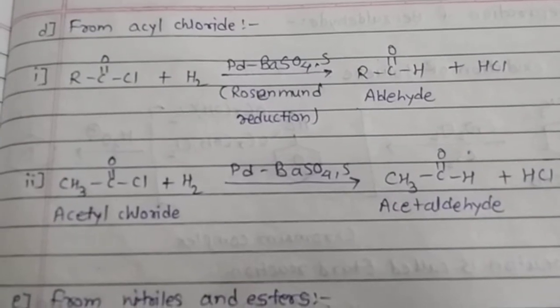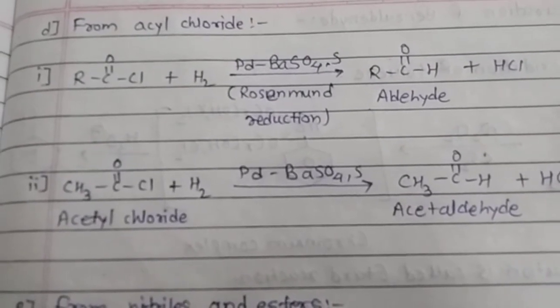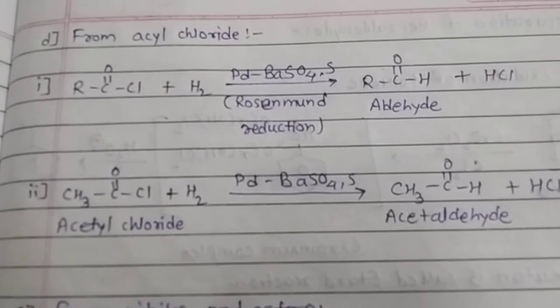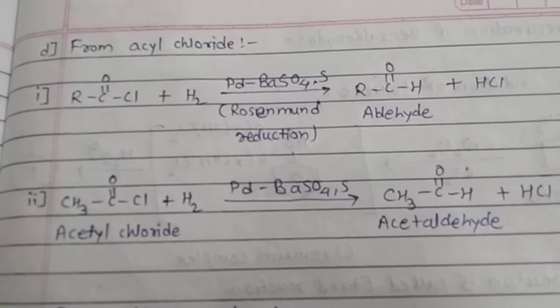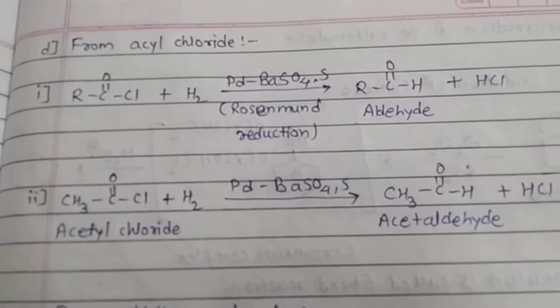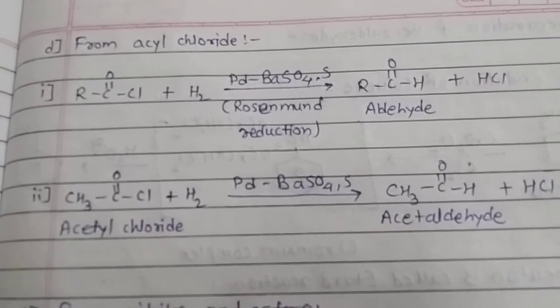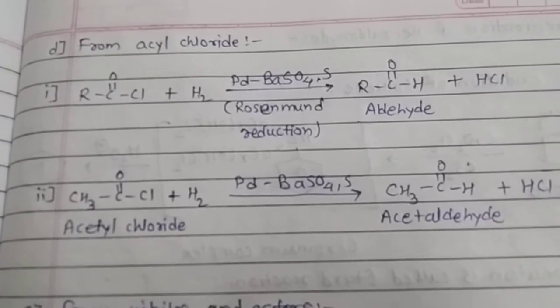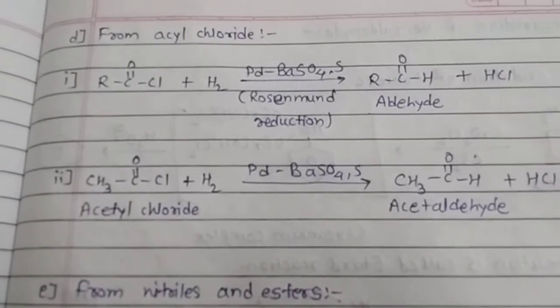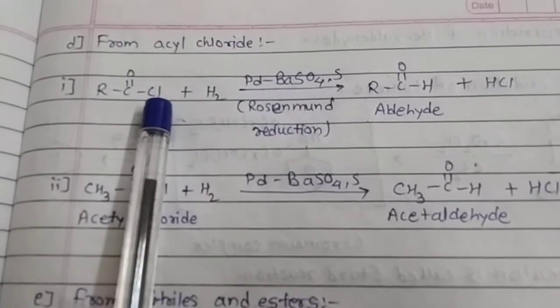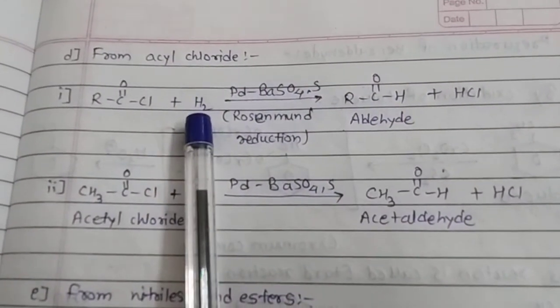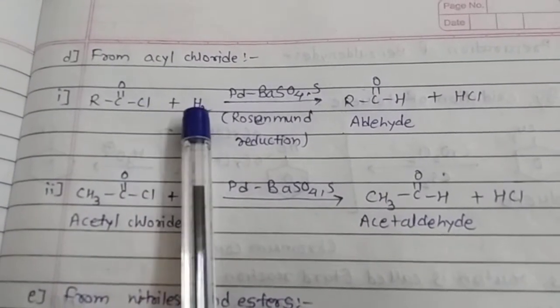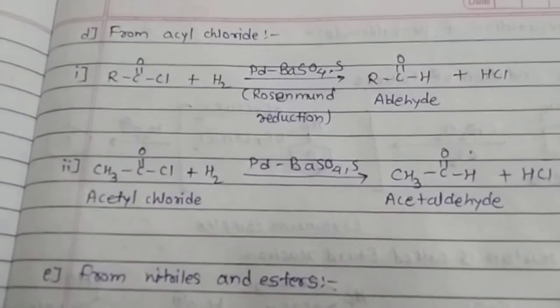Next is from acyl chloride. This reaction is known as Rosenmund reduction reaction. Acyl chloride is treated with hydrogen gas in the presence of palladium barium sulfate catalyst. Palladium metal support is on barium sulfate. Sulfur is used for somewhat poisoning the reaction to slow it down. This chlorine gets replaced by hydrogen from H2, and the other chlorine and hydrogen give HCl. That reaction is known as Rosenmund reduction.